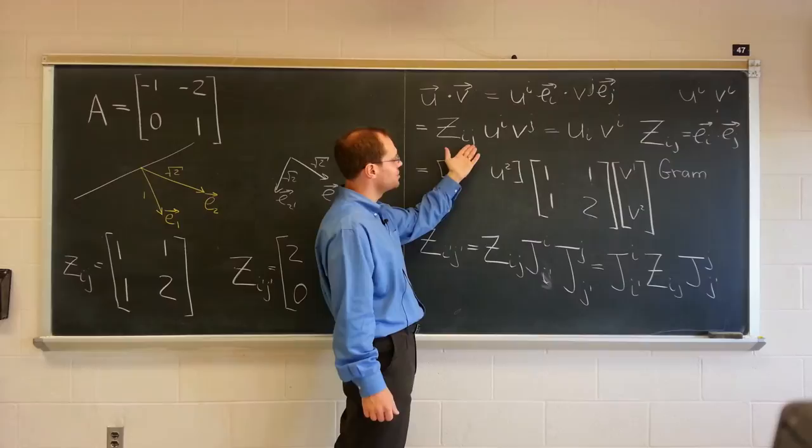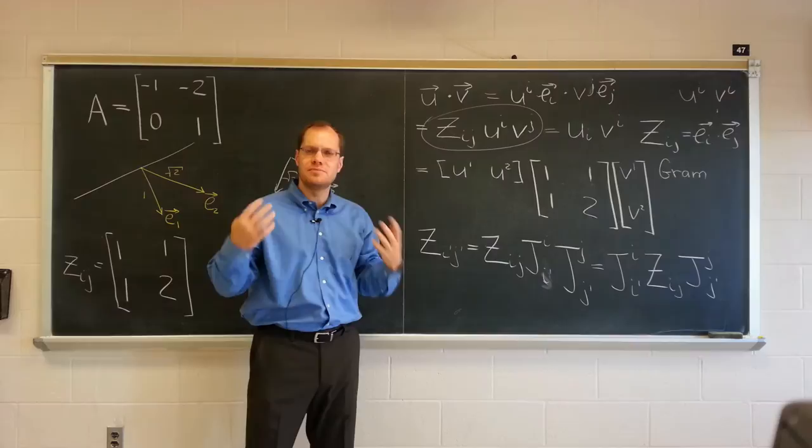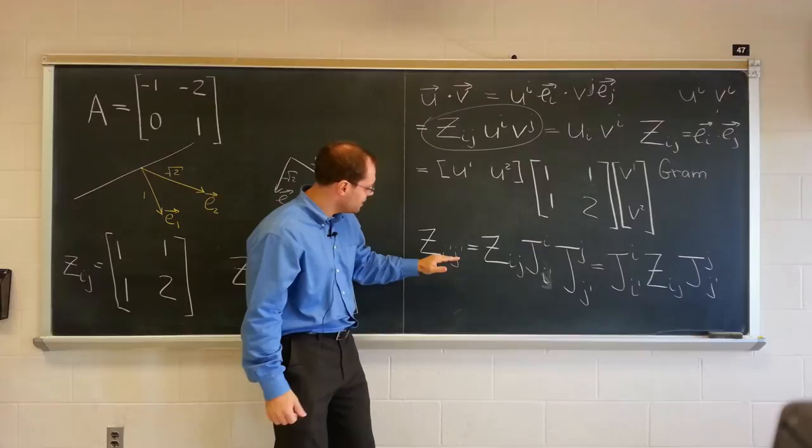And do you see how it arose so very naturally with two lower indices? And the only way an expression such as this can work, these being two upper indices, is that this matrix has two lower indices. So the whole thing just screams doubly covariant tensor. And because it's doubly covariant tensor, we know that the new one